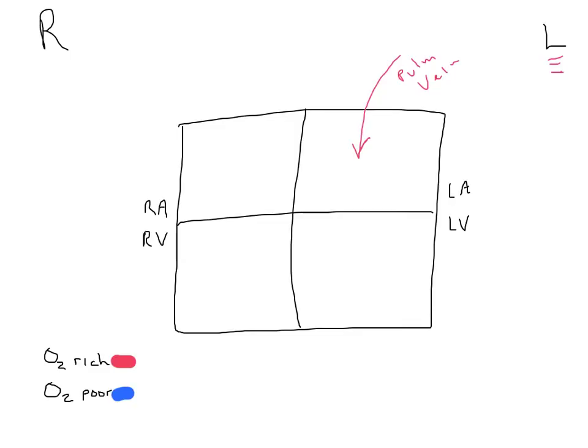Remember that it's atrium to ventricle and out. So from the atrium, blood is going to be passed into the ventricle. When the ventricle contracts, it pumps blood out of the heart to the rest of the body. That vessel is going to be the aorta, sending blood back to the body so it can be delivered to all the tissues to supply them with oxygen.